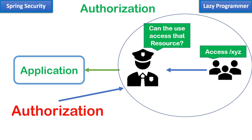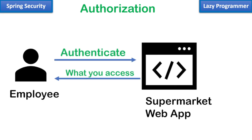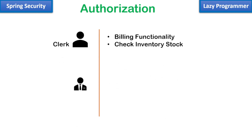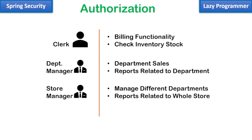Any system can have multiple operations which users can perform, and some users might be able to do one particular operation but not others. Consider a shopping supermarket application where everyone who works in the supermarket can log in and use it. They authenticate with their user ID and password, but what each person can do really depends on who that user is. For example, a clerk can probably access billing functionality or check stock; a department manager can see how their department is doing; and the store manager can see everything across all departments.